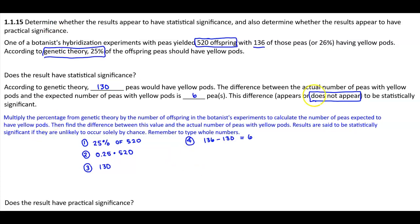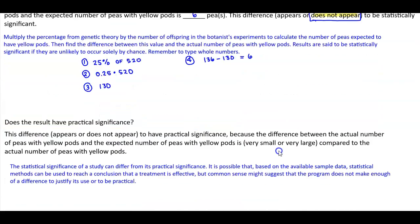We can also highlight that as well. Does the result have practical significance? Now, the statistical significance of a study can differ from its practical significance. It is possible that based on the available sample data, statistical methods can be used to reach a conclusion that a treatment is effective. But common sense might suggest that the program does not make enough of a difference to justify its use or to be practical.